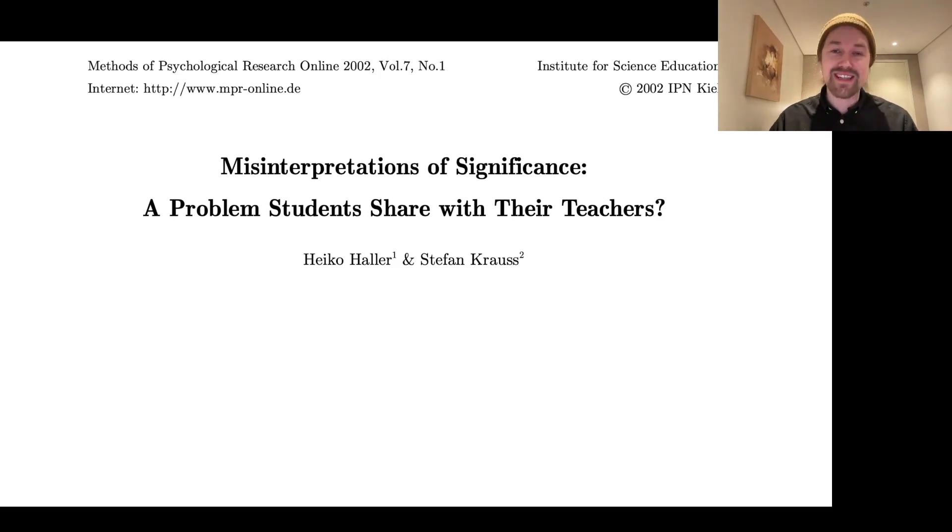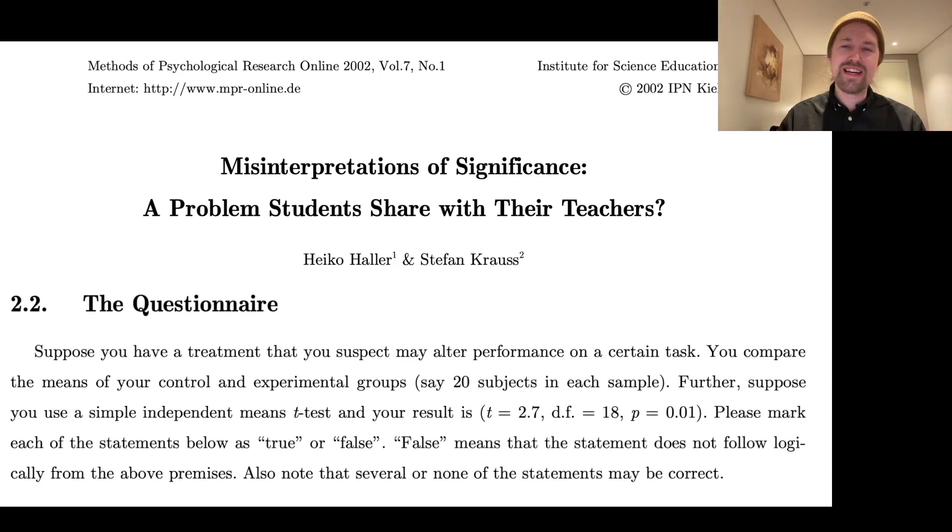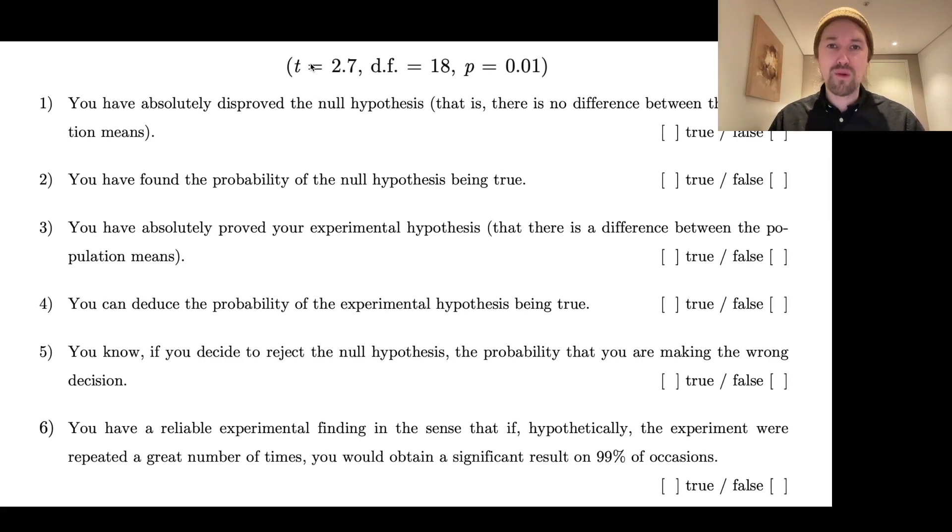So what Haller and Krauss did was that they put together a small survey that they distributed around their university, and the survey or questionnaire had the following premise. So the premise was that you've done an experiment, an experimental group, a control group, and then you analyze this result with a t-test and you get the p-value of 0.01. So given this stated premise, which of the following statements follow from this premise? So which of these statements are true or which of these statements are not automatically true given this premise and the p-value of 0.01?